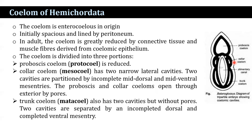The proboscis coelom and collar coelom open to the exterior through pores. The trunk coelom, known as metacoel, also has two cavities but without pores; the two cavities are separated by an incomplete dorsal and a complete ventral mesentery.